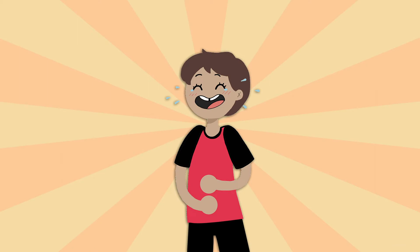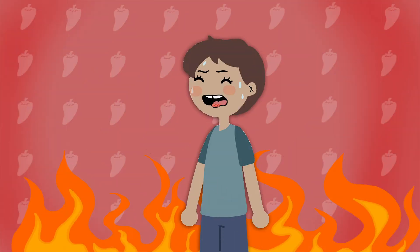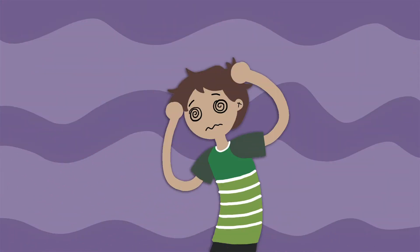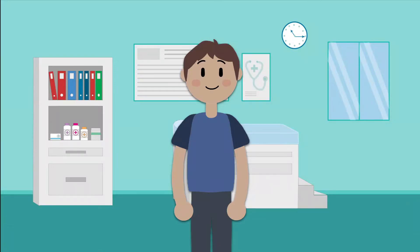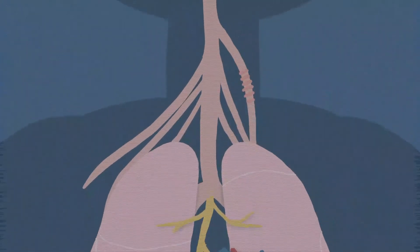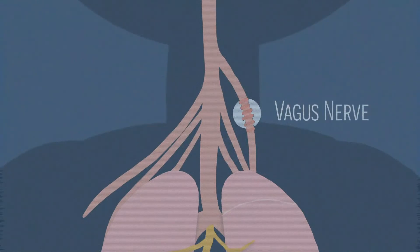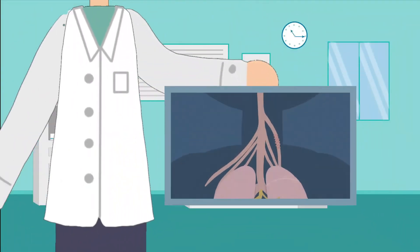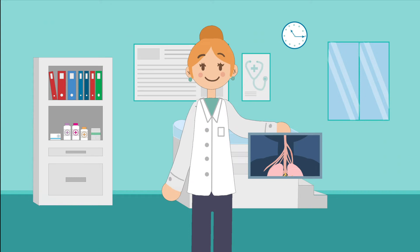Have you noticed that when you laugh really hard, eat spicy foods, or get very stressed you get hiccups? This is caused by involuntary contractions of your diaphragm, the muscle that separates your chest from your abdomen and plays an important role in breathing. This involuntary contraction causes your vocal cords to close very briefly, which produces the characteristic sound of a hiccup.